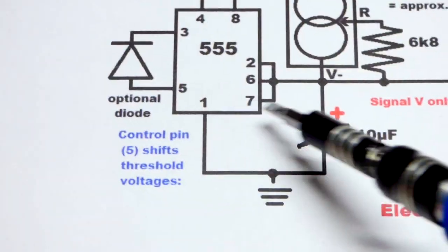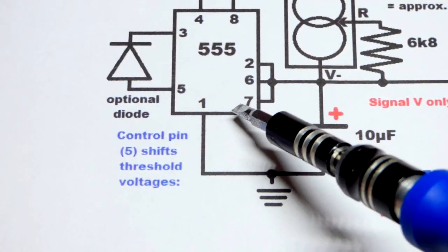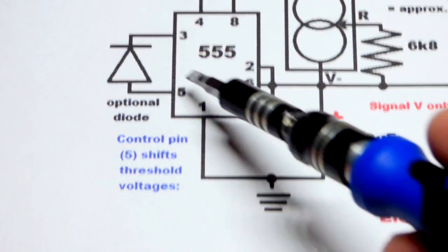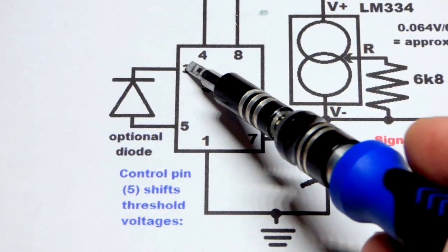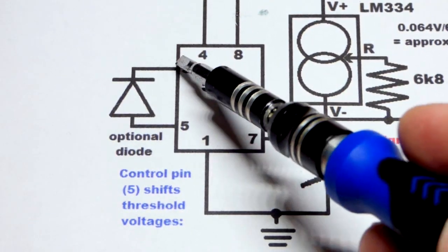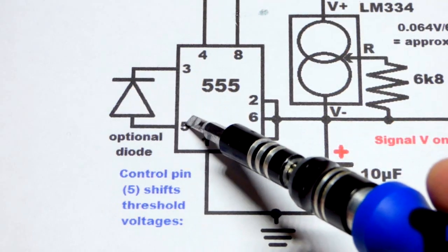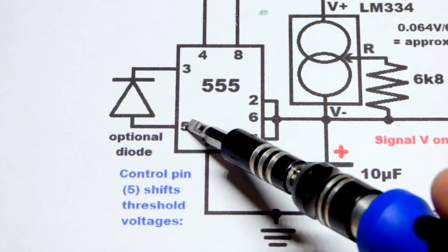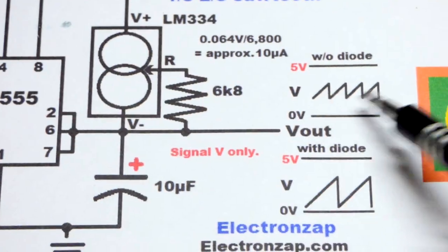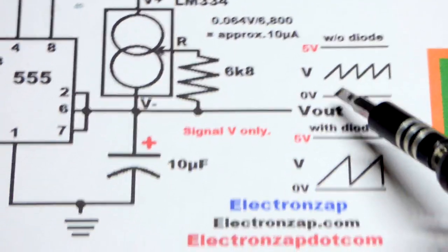Here we have the output. When the capacitor is discharging, because it hit two-thirds supply voltage, the output also goes low—that's pin 3. We're going to feed that back to pin 5. Pin 5 connects to the internal voltage divider that makes up the one-third, two-thirds supply voltage.